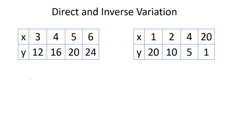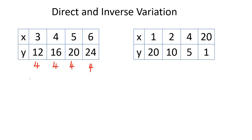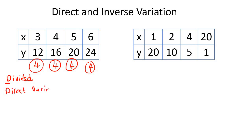Now I want you to divide them — the bottom number divided by the top number. So 12 divided by 3, what is that? 4. 16 divided by 4? 4. 20 divided by 5? 4. 24 divided by 6? 4. Every time we divided the numbers, we kept getting the same answer. So when you divide and keep getting the same answer, that is called direct variation. Easy to remember because they both start with D.